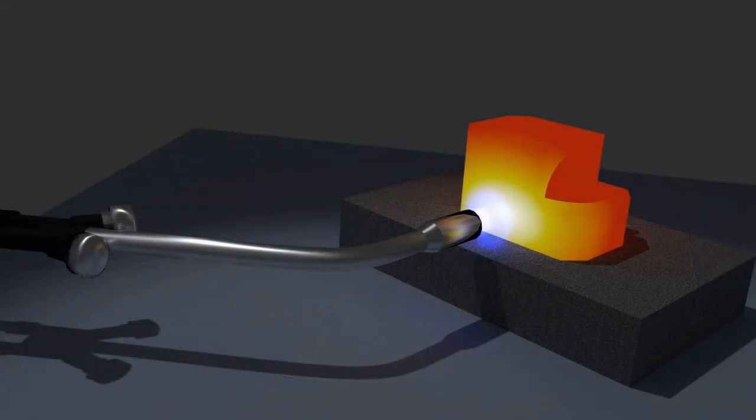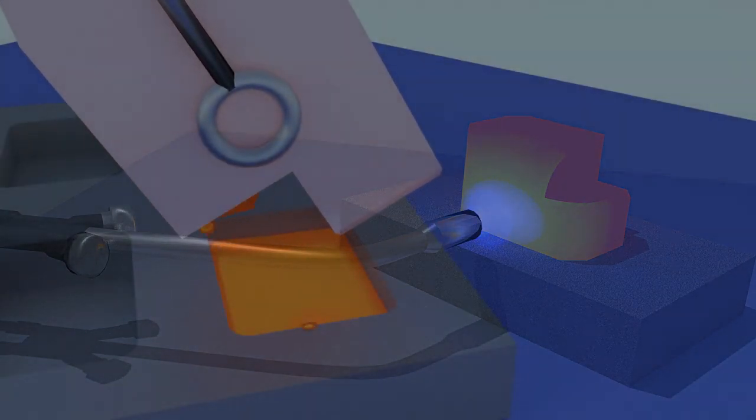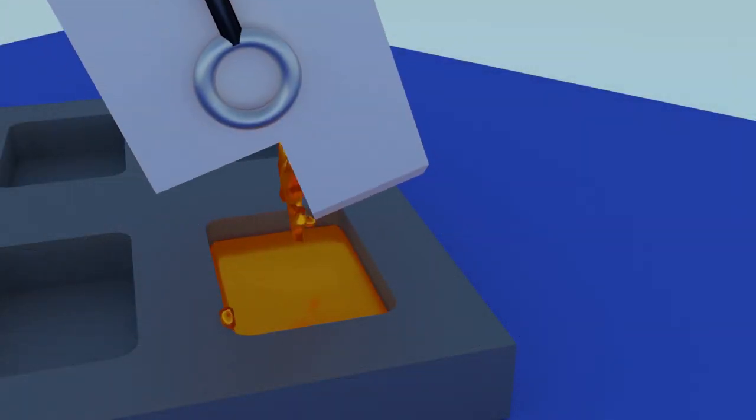Melt your metal. When it flows like water, pour it into an ingot mold to make a bar of gold, or pour it into ice water to make shot.